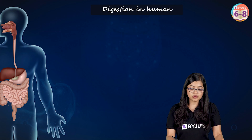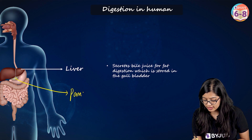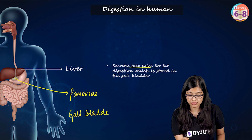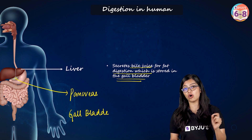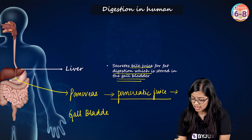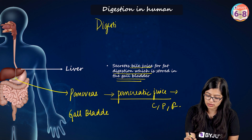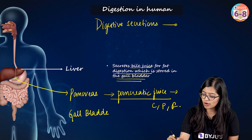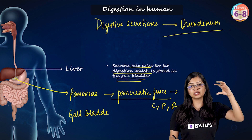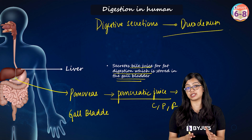The digestive glands include the liver, pancreas, and gallbladder. The liver produces bile juice, which is essential for the digestion of fat, and excess bile is stored in the gallbladder. The pancreas produces pancreatic juice — a mixture of enzymes that help with the digestion of carbohydrates, proteins, and fats. All these digestive secretions are poured into the duodenum region of the small intestine, where partial digestion takes place. As food moves further, complete digestion occurs followed by absorption.